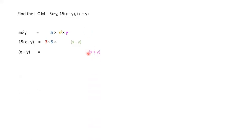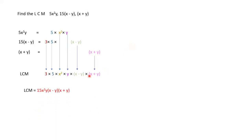Now figure out: 3 comes from here, 5 comes from here — we are finding the highest power of each factor. The LCM is 5x²y(x − y)(x + y). Check: 3×5 = 15, x² is there, y is there, (x − y) and (x + y) are there. That is the LCM of the given expressions.